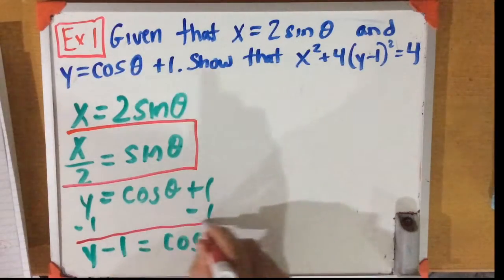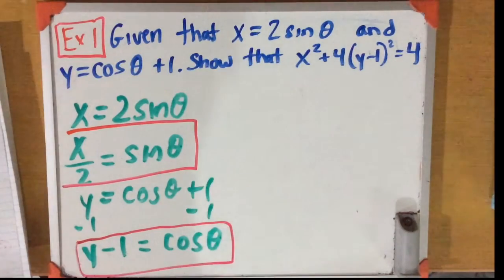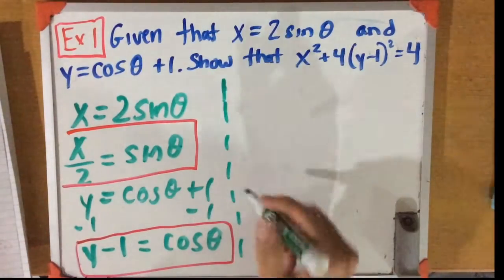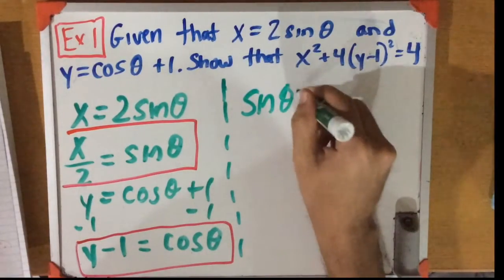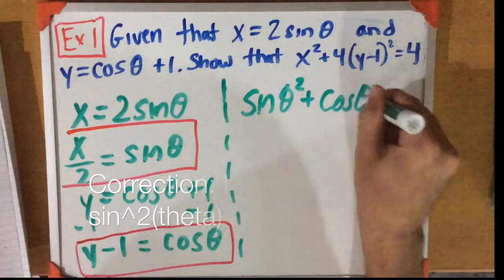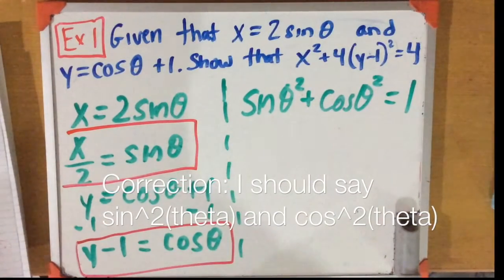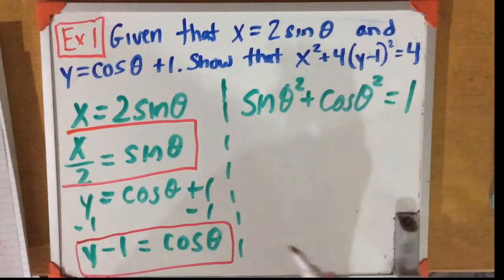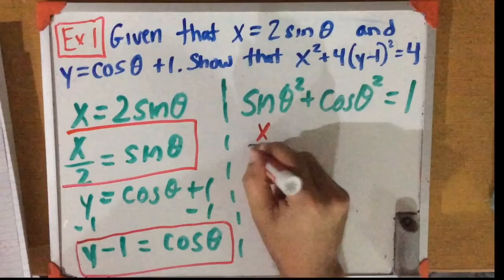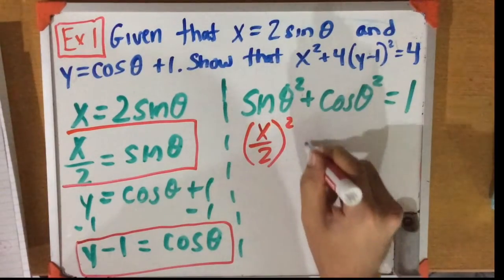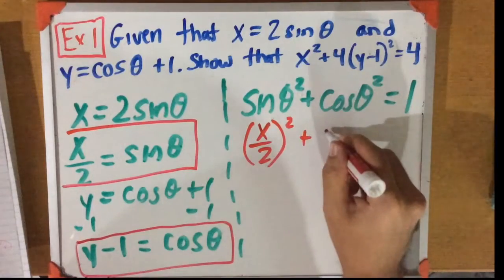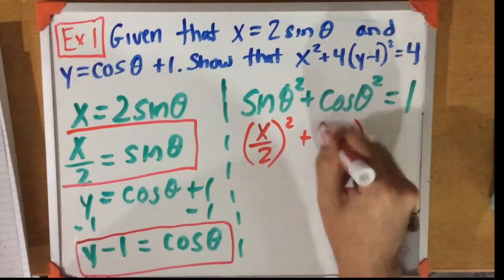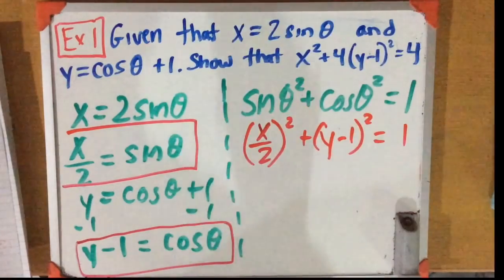I think you can see where I'm going here. Let's use the trig identity we just talked about, which is sine squared theta plus cosine squared theta is equal to 1. We know what sine theta is and we know what cosine theta is, so hopefully that will help us prove that equation. Substituting in: sine theta is x over 2 squared, and cosine theta is (y minus 1) squared. Let's go ahead and simplify.